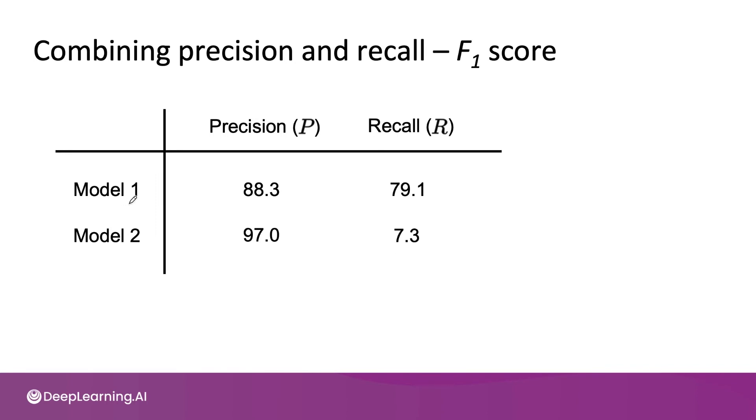Sometimes you have one model with a better recall, and a different model with a better precision. So how do you compare two different models? There's a common way of combining precision and recall using this formula, which is called the F1 score.